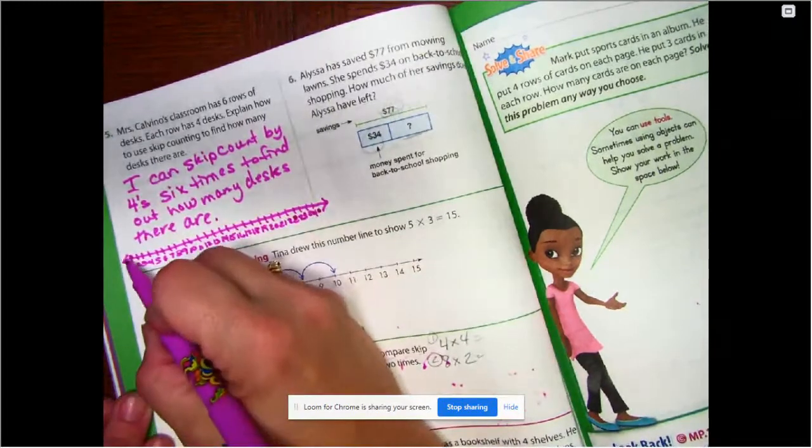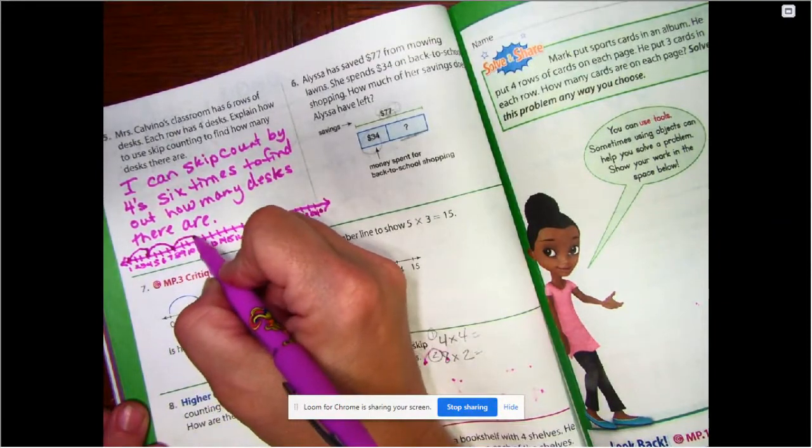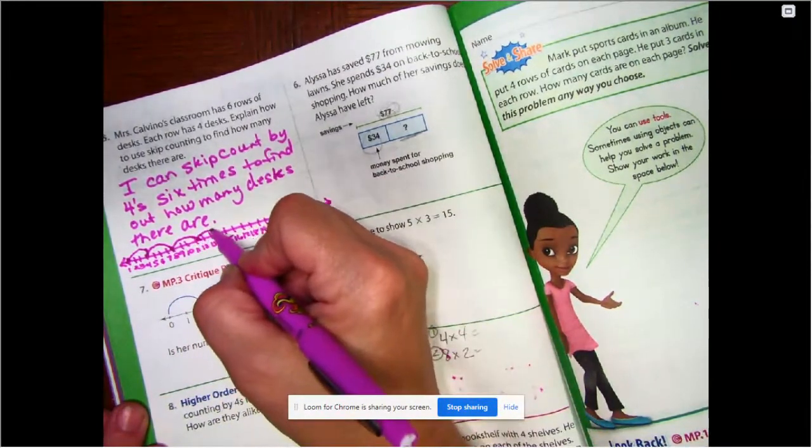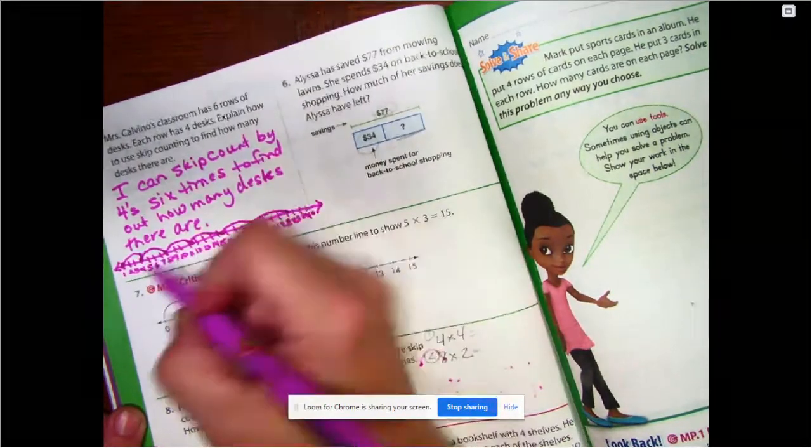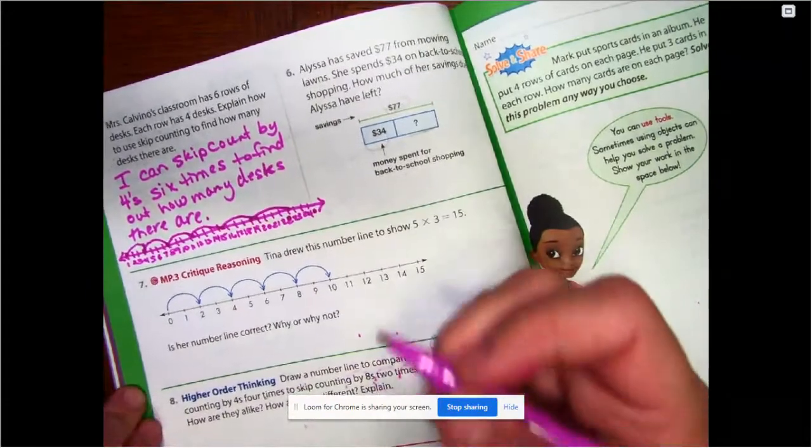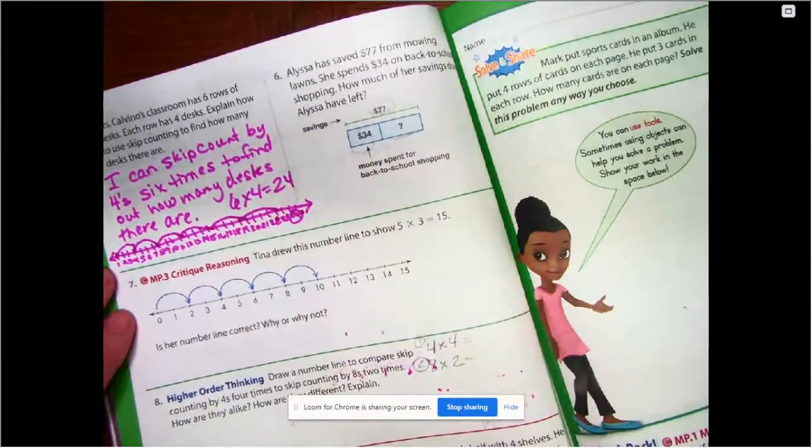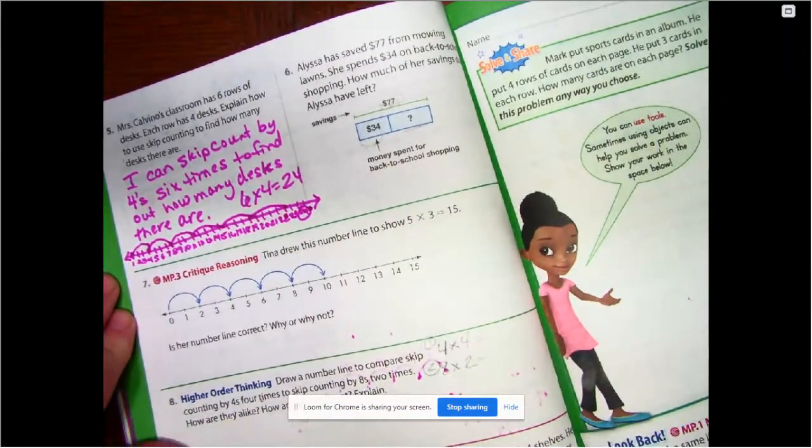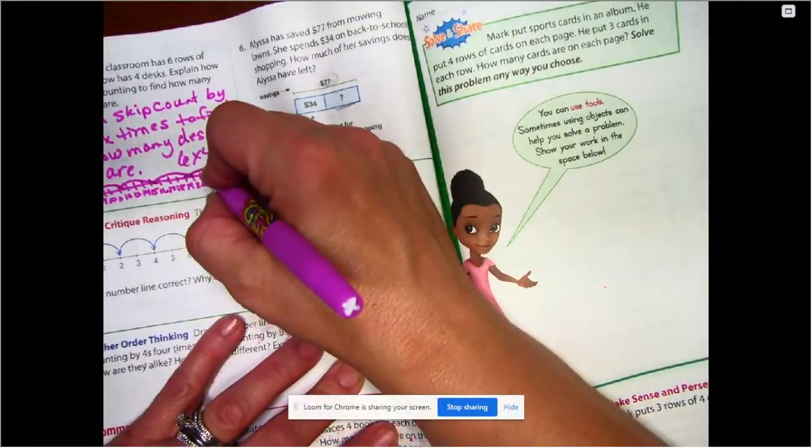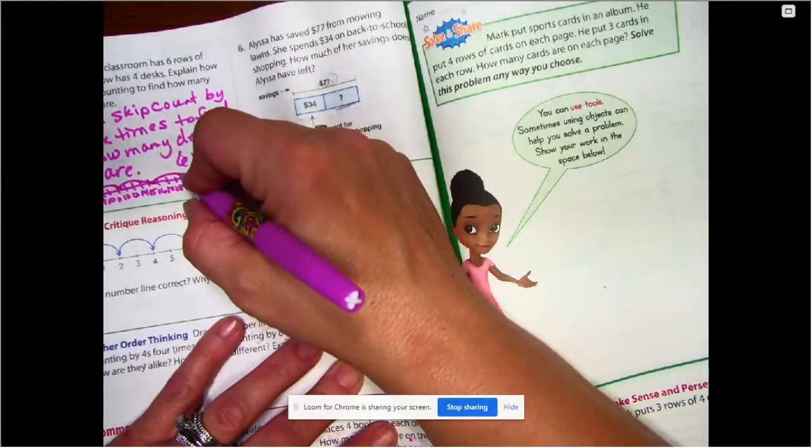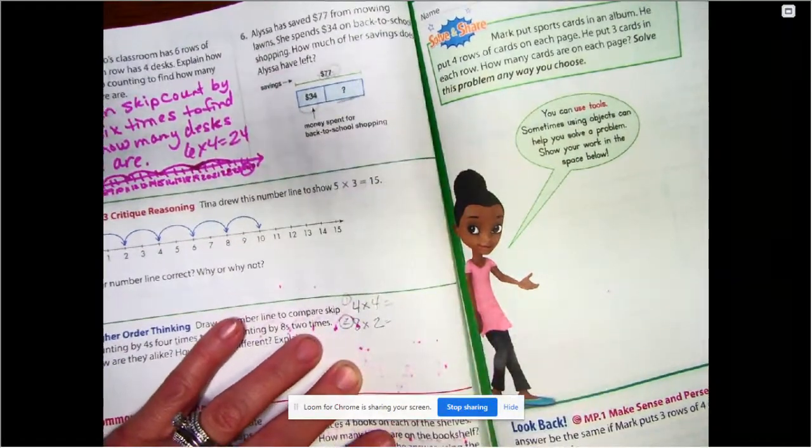So we're going to jump by fours. So there's one jump to that four. Eight. Twelve. Sixteen. Twenty. Twenty-four. So we have six jumps of four. Six groups of four equals twenty-four. All right. Kind of is a hard one to see because it's very messy.